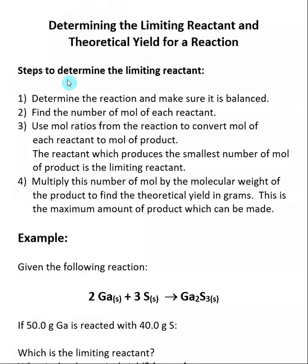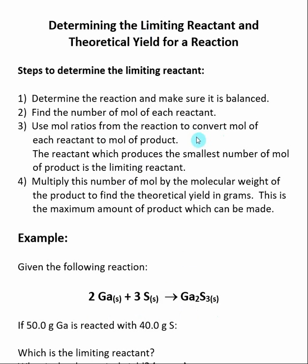There are defined steps we can use for determining the limiting reactant. The first thing we need is our reaction, and we need to make sure that it is balanced. Then we need to find the number of moles of each reactant. The units implied inside of this reaction are either atoms or moles, so we must convert whatever information we are given about our reaction to moles in order to use our reaction to get mole conversion units.